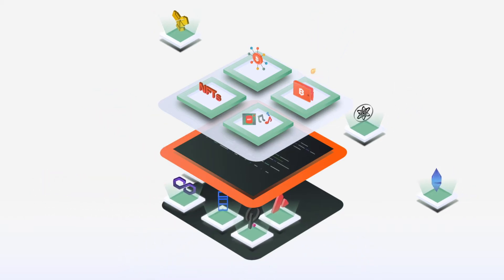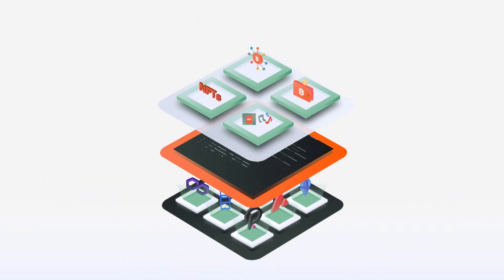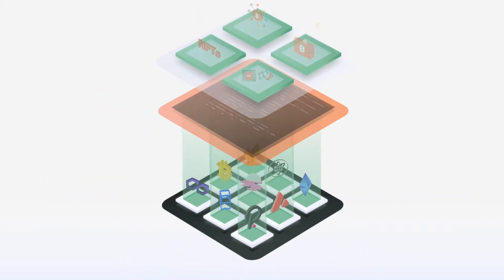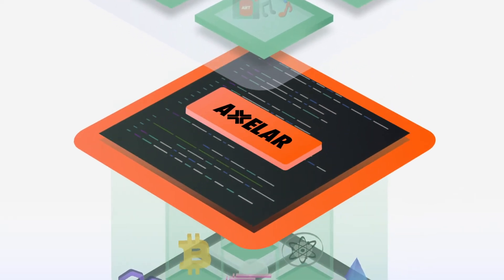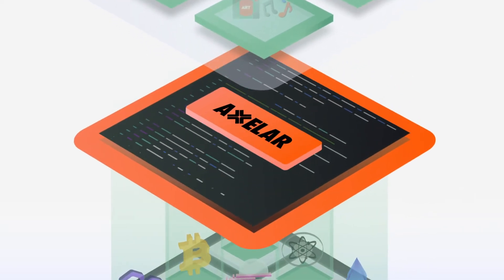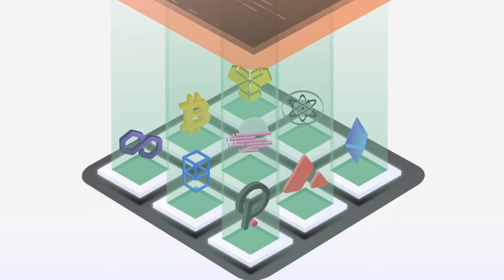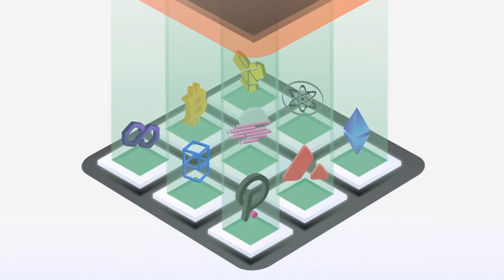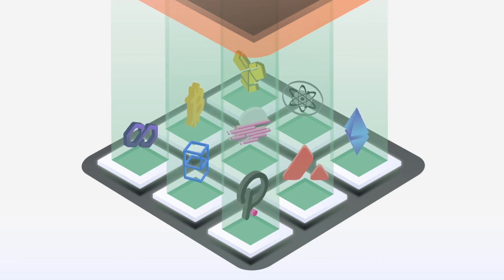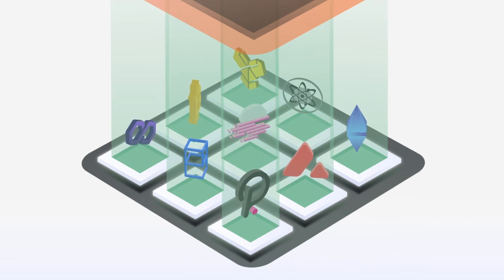With only a few lines of code, protocol developers can add arbitrary chains to the network through the permissionless validators. On top of the network sit Axelar Relay Services and the Axelar SDK. The SDK allows easy access to the network and composability across the unified network of blockchains through a collection of application layer protocols and APIs.